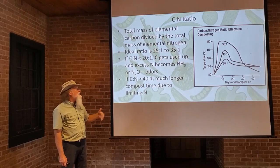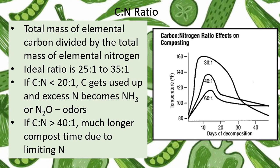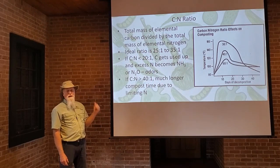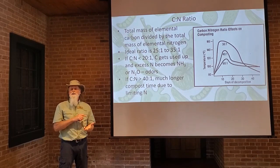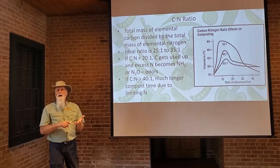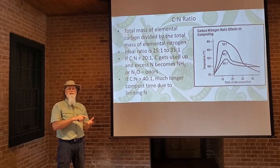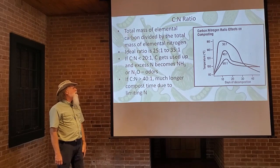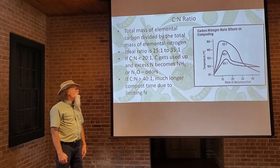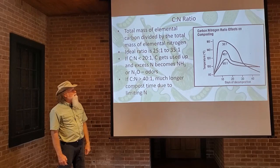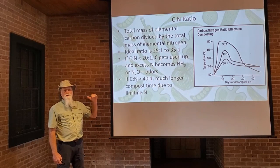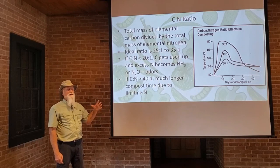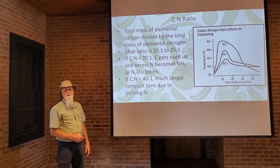If the carbon-nitrogen ratio is too high — say, greater than 40:1 — then it's going to take much longer for the compost to break down, because you're limiting nitrogen. Nitrogen is important for proteins, for amino acids, for DNA. Every time a microorganism divides or replicates, it's got to make more nucleic acids — without nitrogen, it can't do that. Everything will slow down, even come to a standstill, if you don't have enough nitrogen. So the ideal ratio is somewhere around 25:1 to 35:1 to get maximum activity and maximum breakdown.